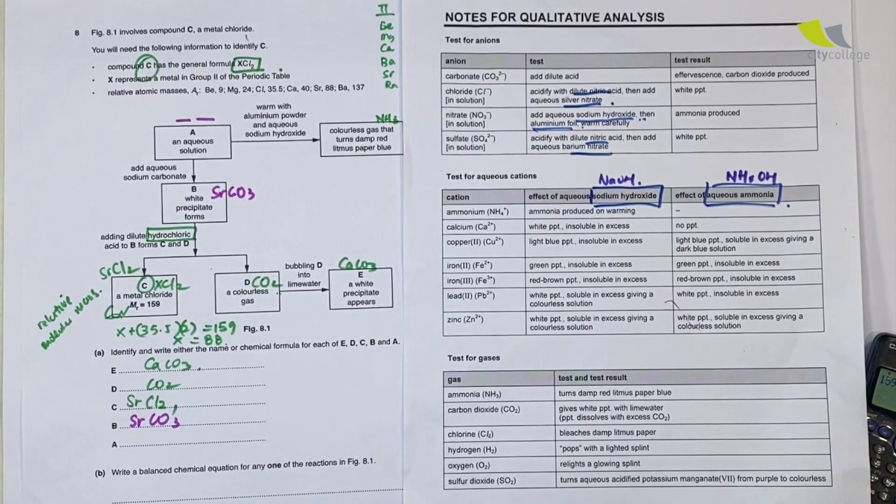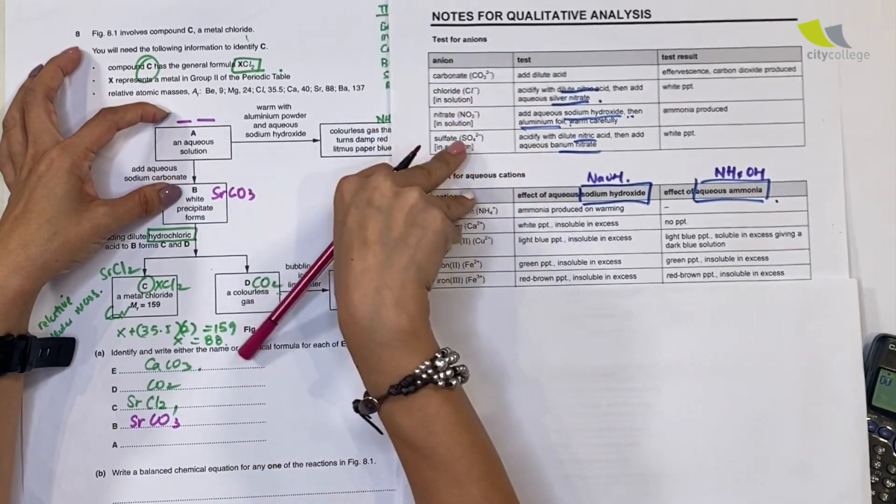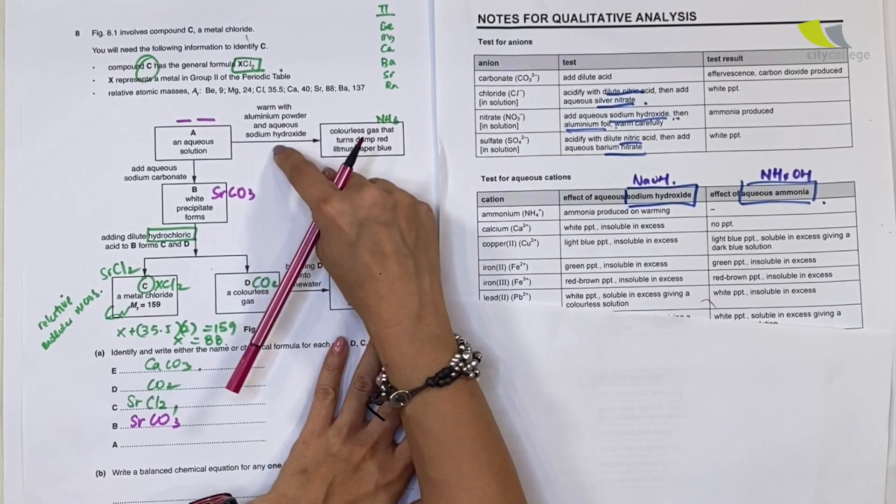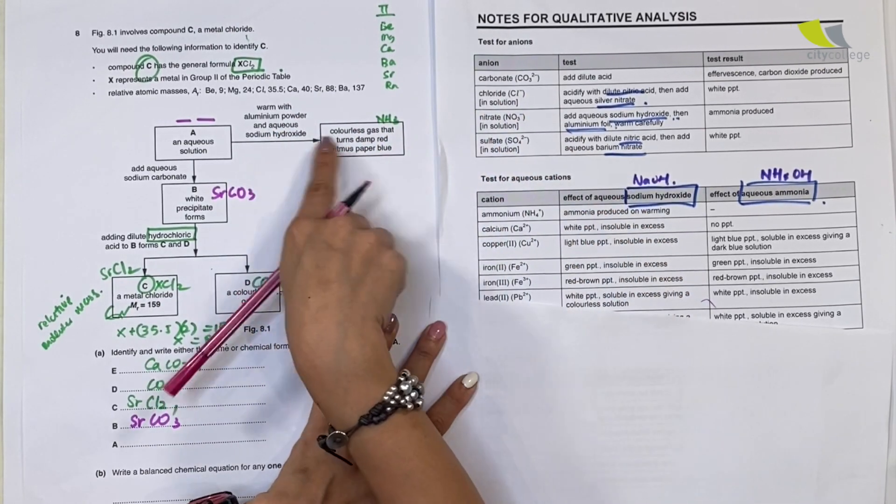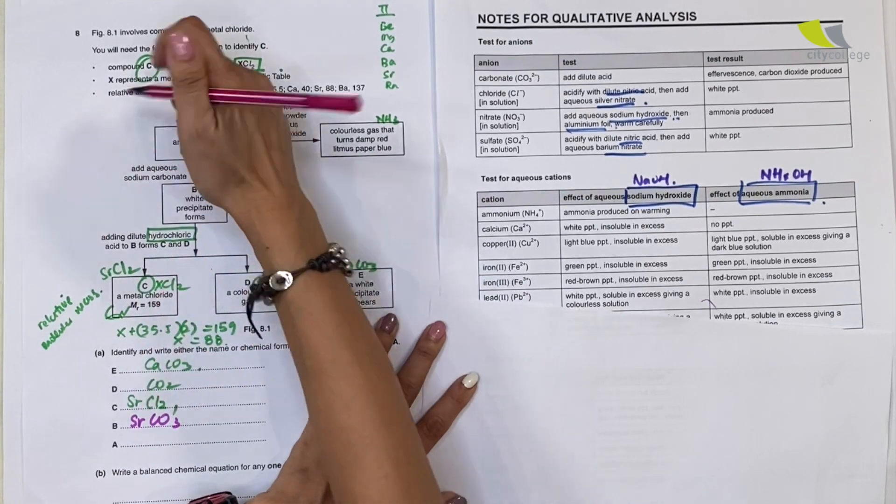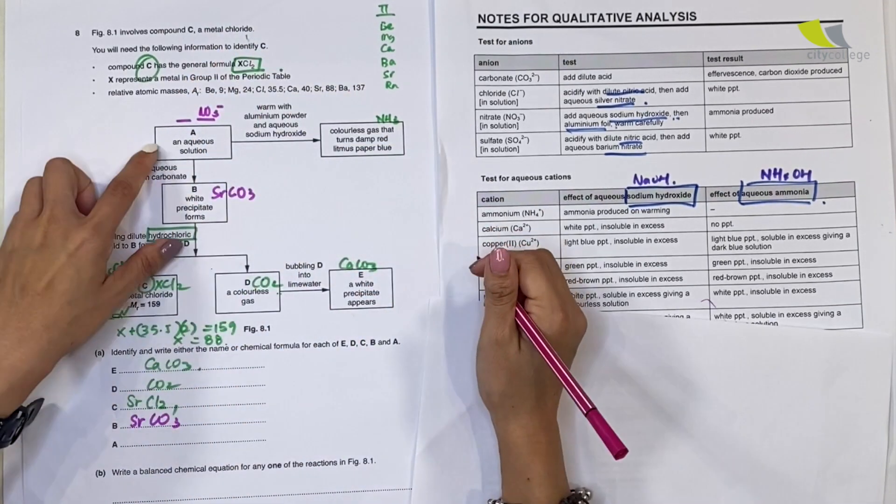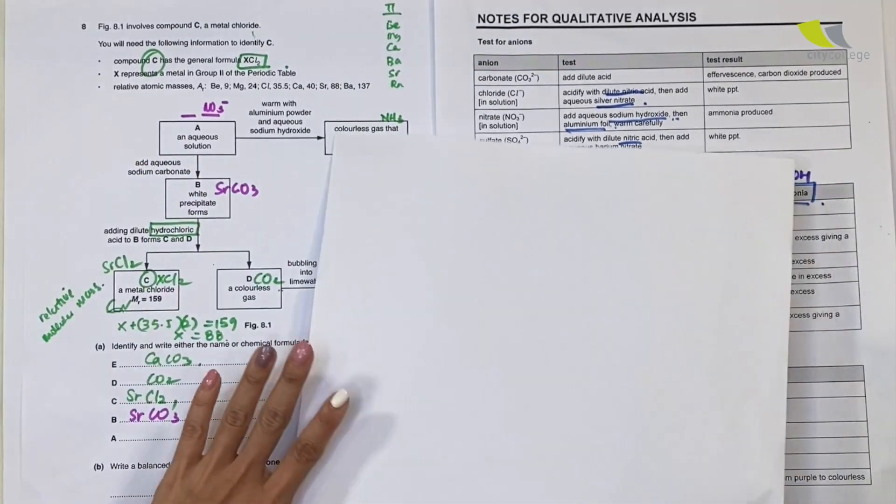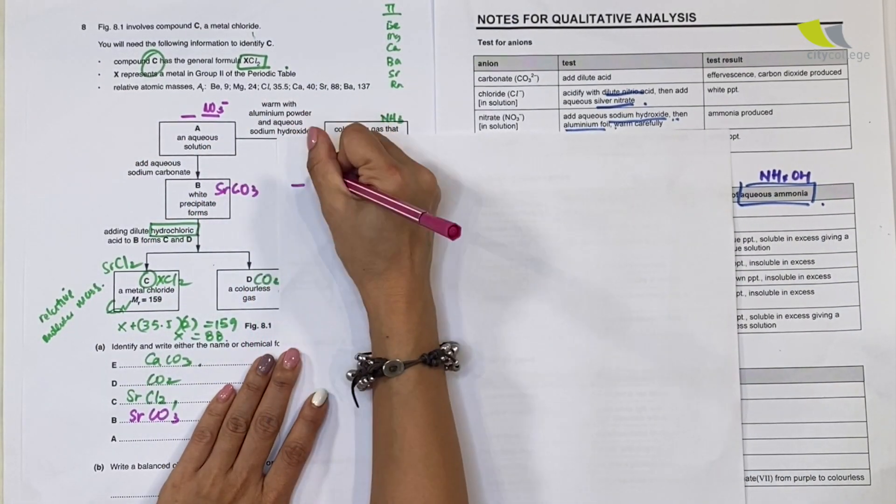I want and I have one full equation that's balanced. I have another one that I balanced just now with the lime water, so you can pick any one of them to write here. So immediately I know that my B is strontium carbonate, SrCO3.